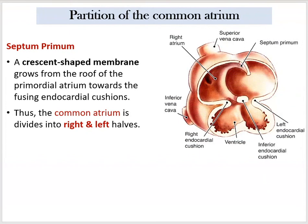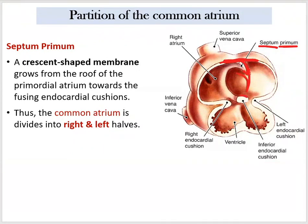This interatrial septum will start to grow from the roof of the primitive atrium. The septum that grows down is the primary one, known as septum primum — sometimes pronounced 'septum primum.' This septum primum is crescent-shaped and descends all the way down until it reaches the endocardial cushion. Then the septum primum will fuse with this cushion.